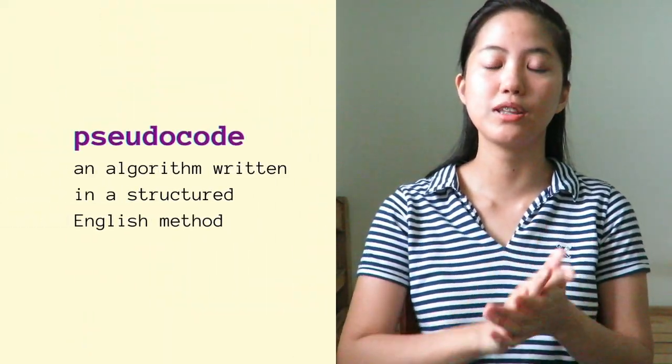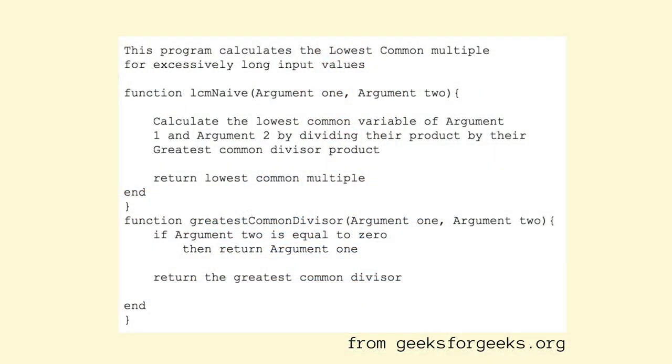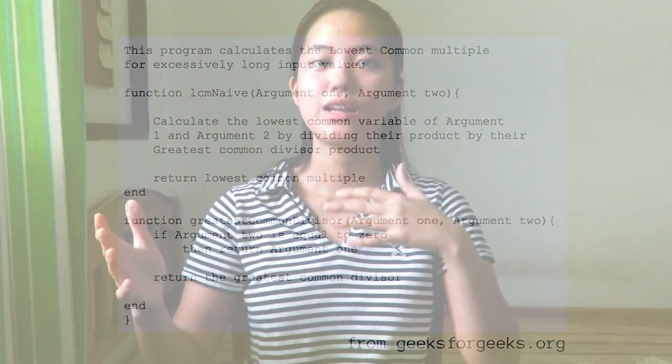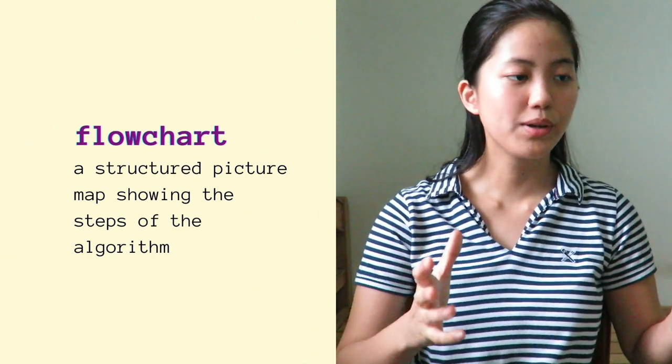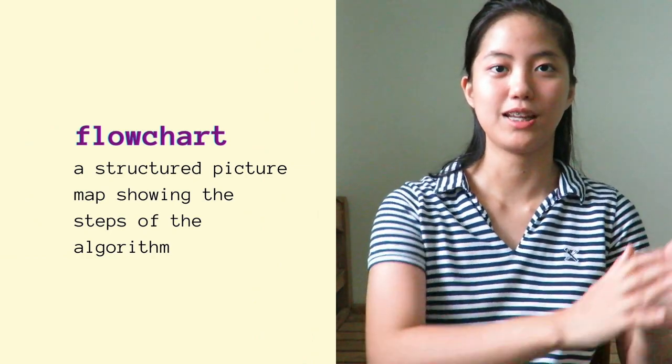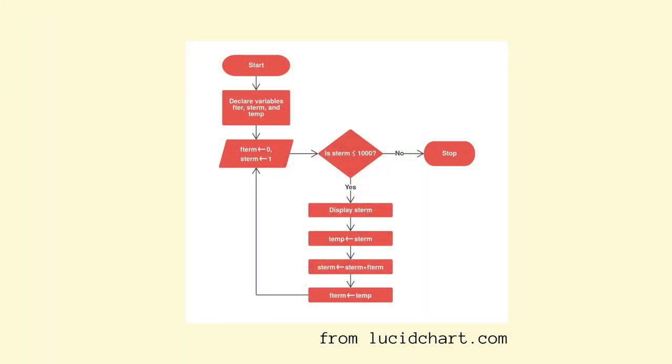A pseudocode is an algorithm written in a structured English method — I'll show here what a pseudocode looks like. Next, a flowchart, according to my professor, is a structured picture map showing the steps of the algorithm. Now that you know what pseudocodes and flowcharts are, I'll proceed to explaining why they are important.